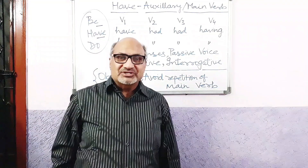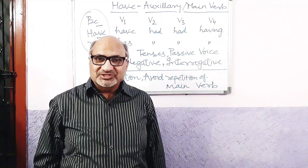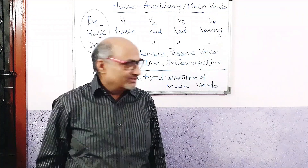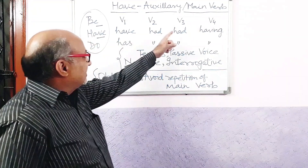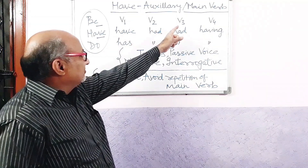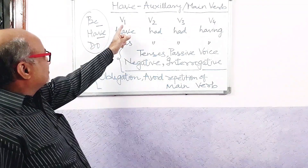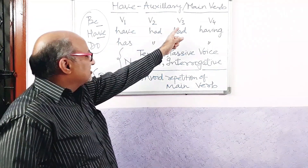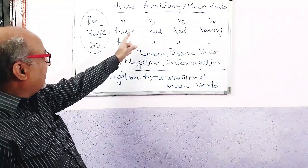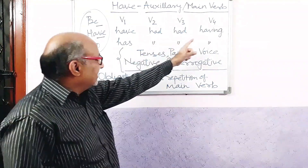We are going to study the overall role of 'have' in English language. Our first point: its forms. Like an ordinary verb, it also has four forms — V1, V2, V3, and V4. V1 is the present form, V2 is the past form, V3 is the past participle, and V4 is the -ing form. The forms are: have, had, had, and having — or has, had, had, and having.